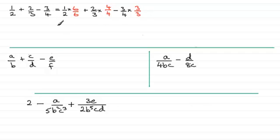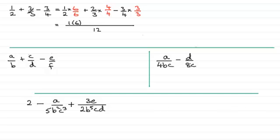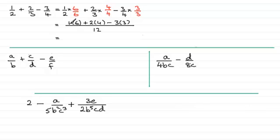When normally doing these questions I wouldn't set them out like that. I'd go straight to a line: choose what number they all go into, which is twelve. For the half, what do I multiply two by to get twelve? Six. So I do the numerator one multiplied by six. For two-thirds, what do I multiply three by to get twelve? Four. So two times four. And for minus three-quarters, what do I multiply four by to get twelve? Three. So three times three. Simplifying: one times six is six, two fours are eight, six and eight is fourteen, take away three threes which are nine, gives five. Five over twelve — five twelfths.